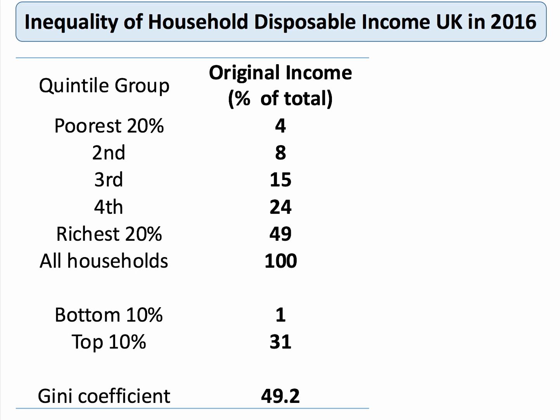If we take original income — income from wages and salaries, income from interest from savings, that kind of stuff — basically income before taxes and benefits have their effect — we see that the poorest fifth of the population only earned 4% of all income. The next quintile earned only 8%, the next 15%, so the poorest 60% of the population earned only 27% — just over a quarter — of original income. The richest fifth earned 49% of income in the UK in 2016, and the top 10% earned 31%.